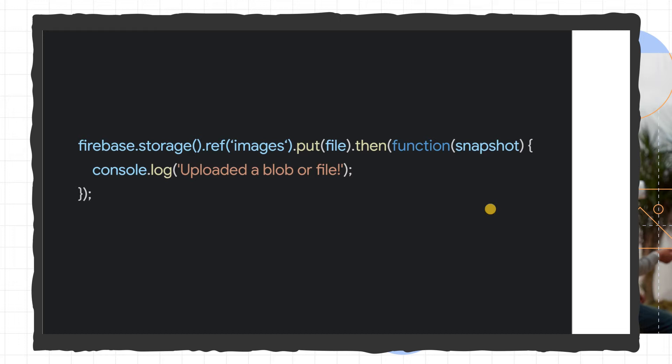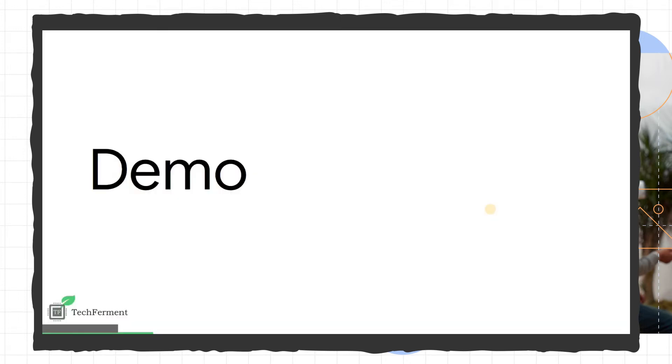Here we have an images directory, and then we pass a file. A file can be anything like an image, audio file, or text file. We call the put method, and since this is a JavaScript promise, we handle it using a then-catch block.